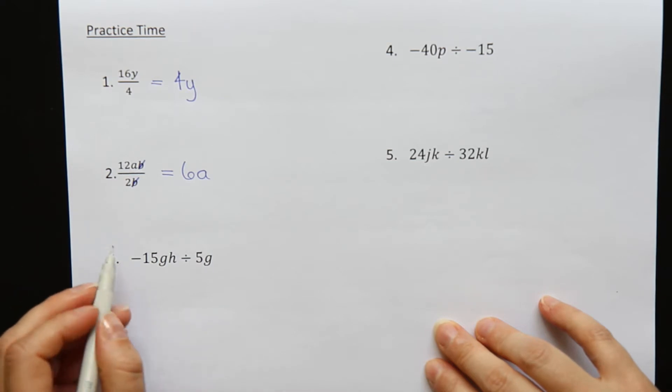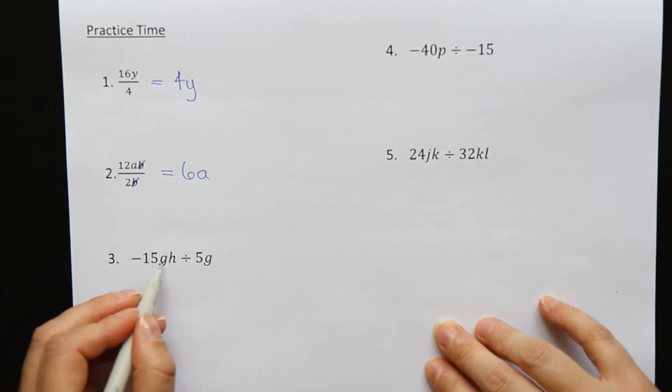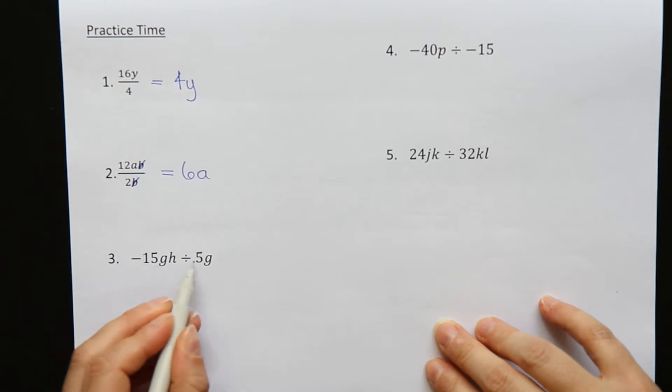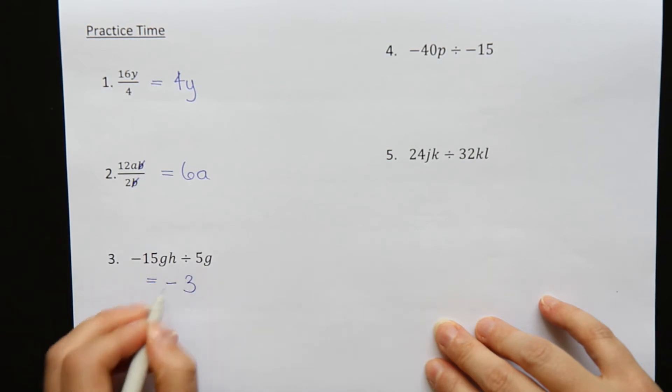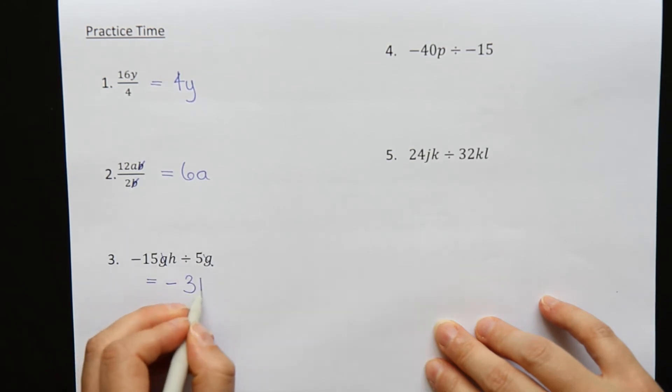Question three. Minus 15gh divide by 5g. Let's divide the numbers. Minus 15 divide by 5. We'll give a minus 3. Minus and a plus makes a minus. And g and g will cancel off. So h is what's left for your answer.